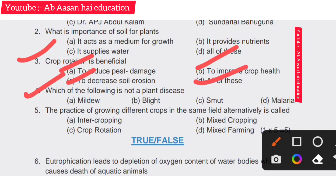Fourth question: which of the following is not a plant disease? Mildew, blight, and smut are all plant diseases, but malaria is a human disease. So malaria is the right answer — it is a human disease, not a plant disease.